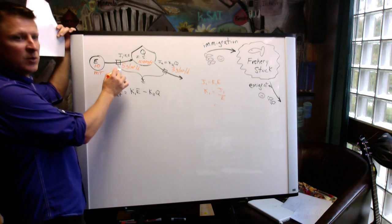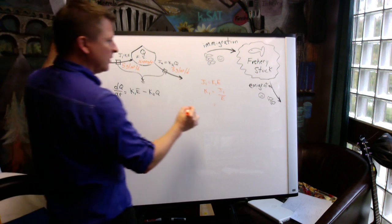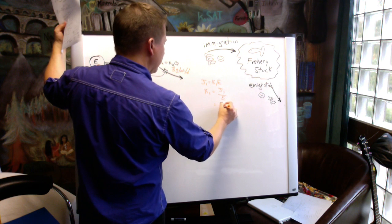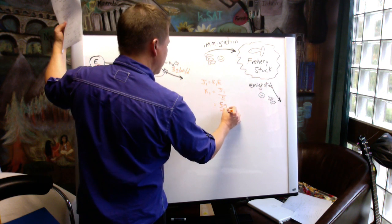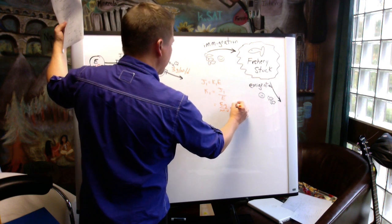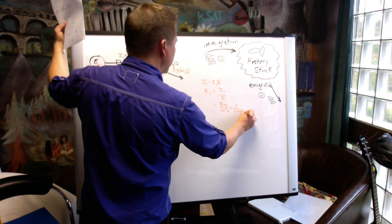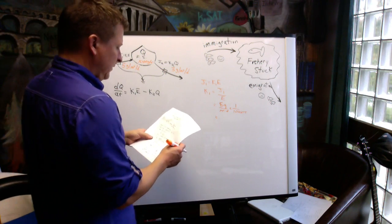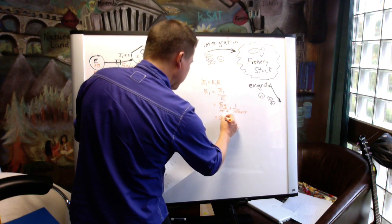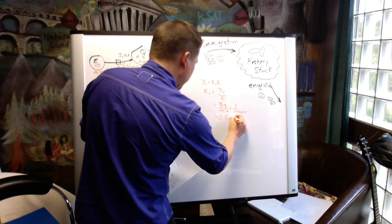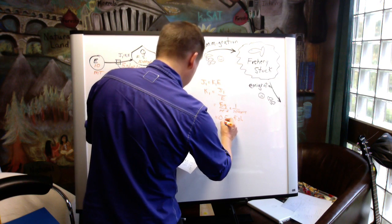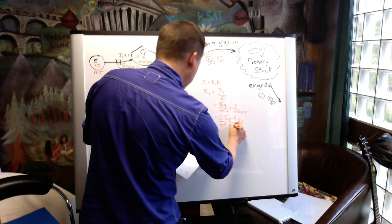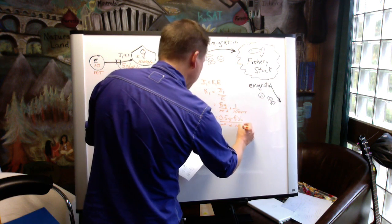Well, we know what J1 is, we're given that, and we know what E is, 10 metric tons. So it's 5 grams per square meter per day divided by 10 metric tons. Therefore, K1 is a half of a gram of fish per square meter per day per metric ton of fish.